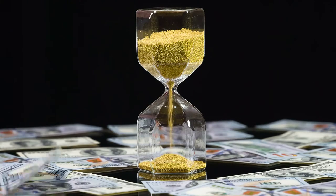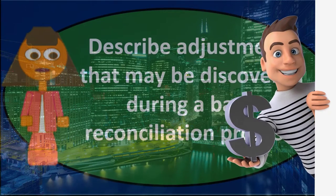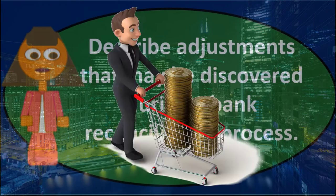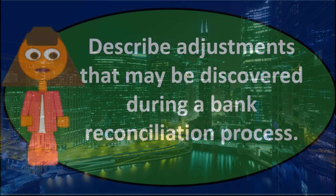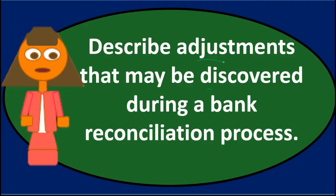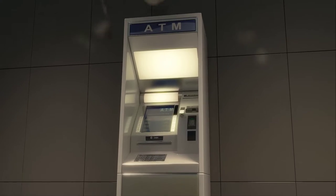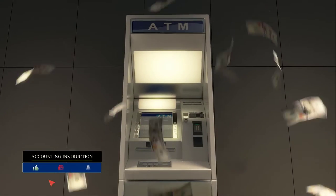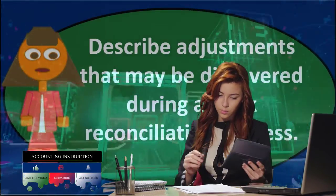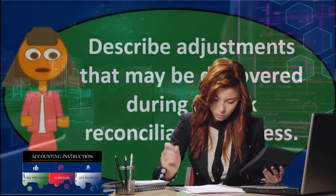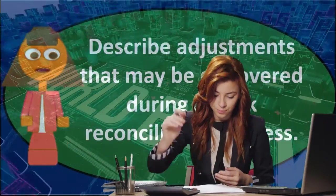The adjustments we focus on are items on the bank statement that are not on our books. For example, if there was a service charge — the bank simply charged us money and took it out of our account — we wouldn't know about it until we got the bank statement. It's not a timing difference; it's permanent. So we have to adjust for it: debit bank service charges expense and credit the cash account, reducing our checking account by that amount.